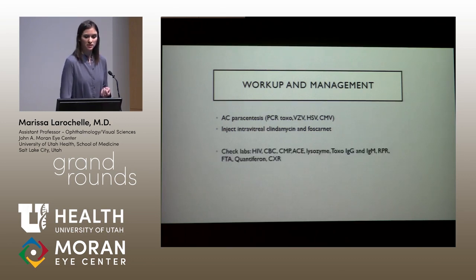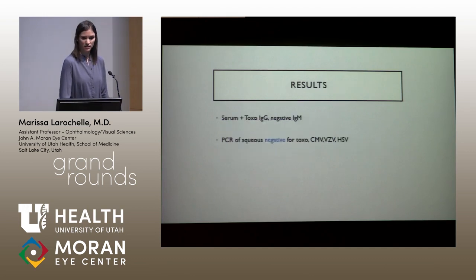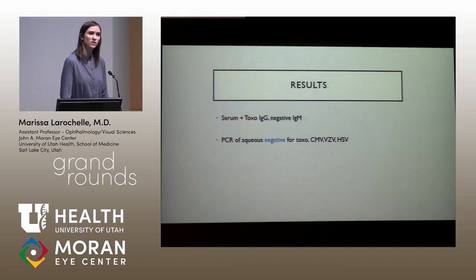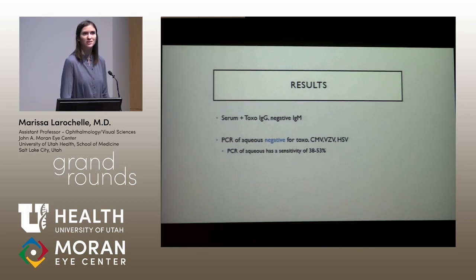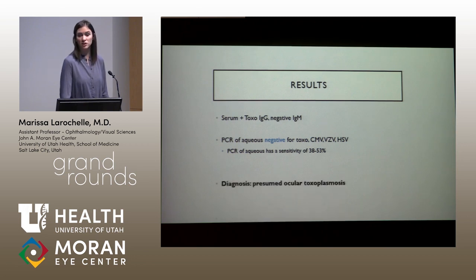These are the labs that were checked, and he was started on Valtrex and Bactrim. Seen a couple days later, the serum toxo IgG was positive but with a negative IgM, and the PCR was negative for all things checked. However, the sensitivity of PCR for toxoplasmosis from an aqueous sample is under 50%, so with retinal whitening adjacent to a pigmented scar — the buzzwords for ocular toxoplasmosis — he was treated as presumed ocular toxoplasmosis.